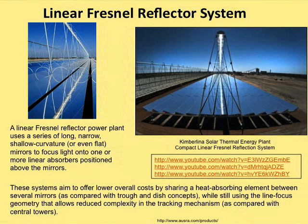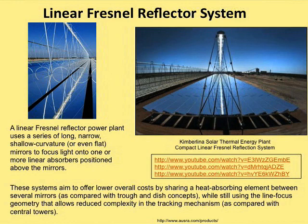The second type is the linear Fresnel reflector system. The big difference is that the tube is stationary — it does not move with the rotating system. We still track the sun throughout the day, but we do it by means of a whole series of mirrors — curved or flat — that make up the Fresnel reflector.